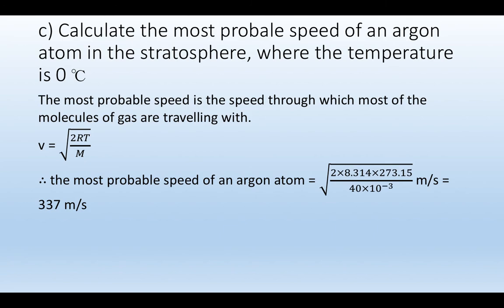And we get the result: the most probable speed of an argon atom is 337 meters per second. Thank you for watching and listening.